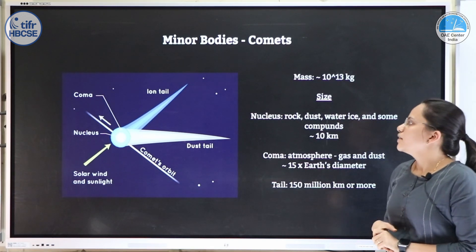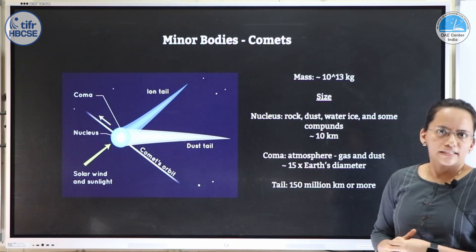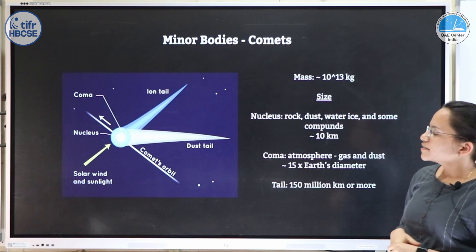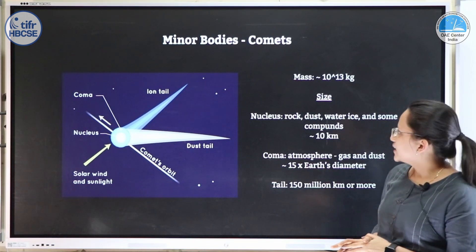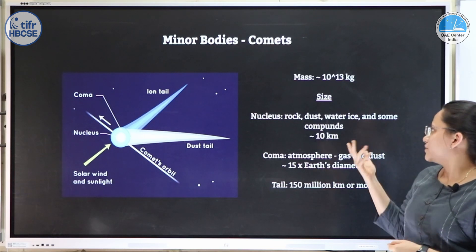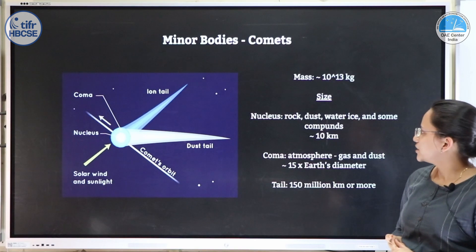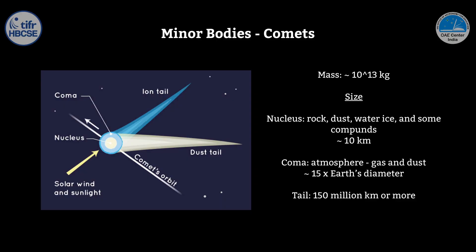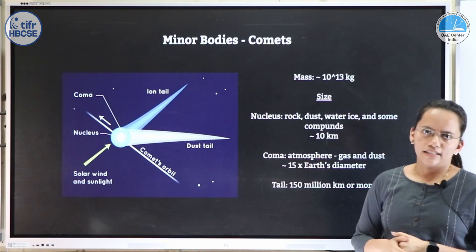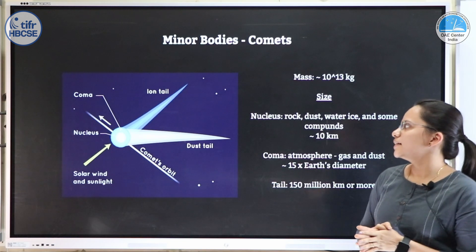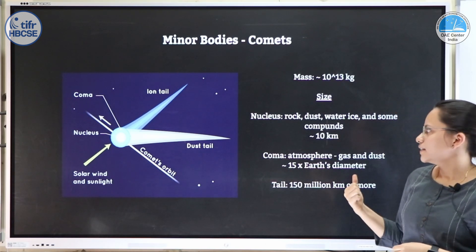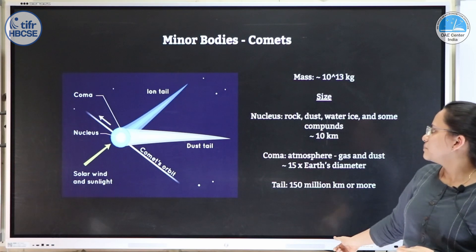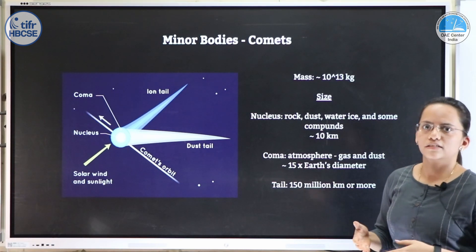Now we come to comets. The largest comet has a mass of about 10¹³ kg. A comet comprises a nucleus which is a rocky core made up of dust, water, and ice, about 10 km in diameter. This rocky core is surrounded by an atmosphere of gas and dust called the coma, which is about 15 times Earth's diameter. As the comet approaches the sun, the ices melt and evaporate, and due to the solar wind this material is pushed backwards forming a tail. At its longest, this tail can be up to 150 million km, which is 1 AU — the distance of Earth from the sun.